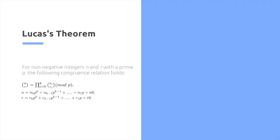Introducing Lucas' theorem. Lucas' theorem states, for non-negative integers n and r with a prime p, the following congruence relation holds, and n choose r is equal to the product of n i choose r i mod p, where we take n and r and produce a decomposition in terms of powers of p.